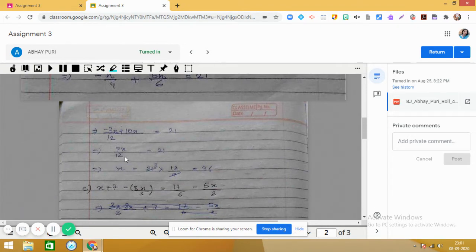So we get 7n/12 = 21. So x equals 21 × 12/7. We can cancel 21 by 7, we are left with 12 × 3, that is 36. So this part is also right.